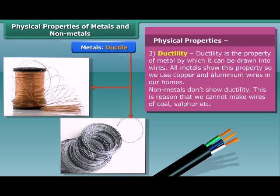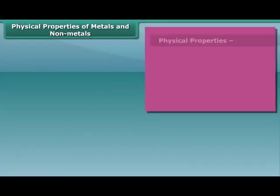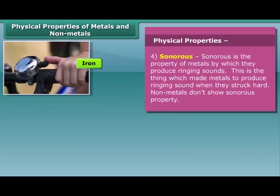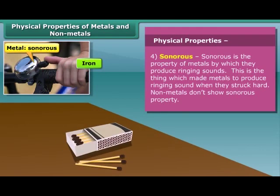Now let's talk about another property of metals, that is sonorous. Metals produce ringing sounds when they are struck, so they are said to be sonorous. The materials other than metals are not sonorous.